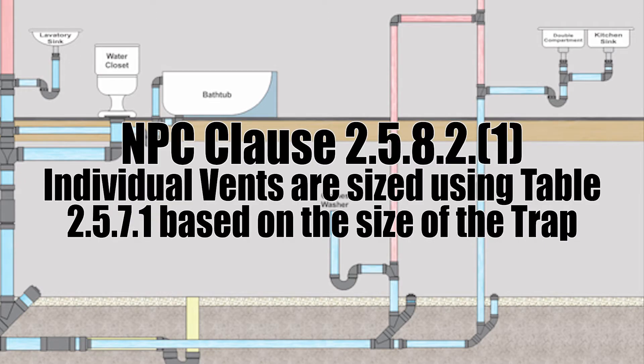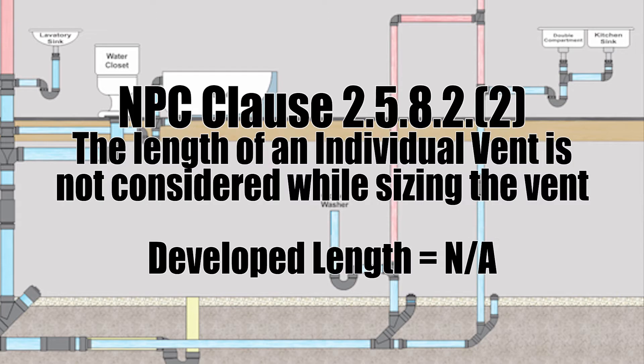Clause 2.5.8.2 number 1. The size of individual vents and dual vents shall be determined using table 2.5.7.1 based on the largest trap served. And 2. When sizing an individual vent or dual vent, the length is not taken into consideration.